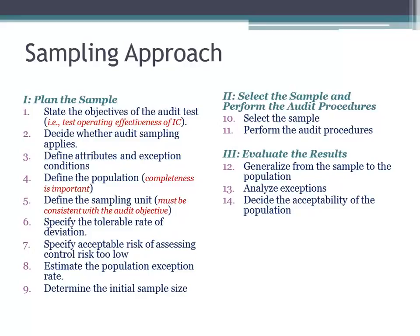If the objective of your test is to test that the cash disbursements are valid — that they actually occurred — then you want to look at a purchase order, receiving report, and vendor invoice. You want to test that that control is operating. If those documents are missing, that's an exception. So you have to be able to identify what is the objective of your test.